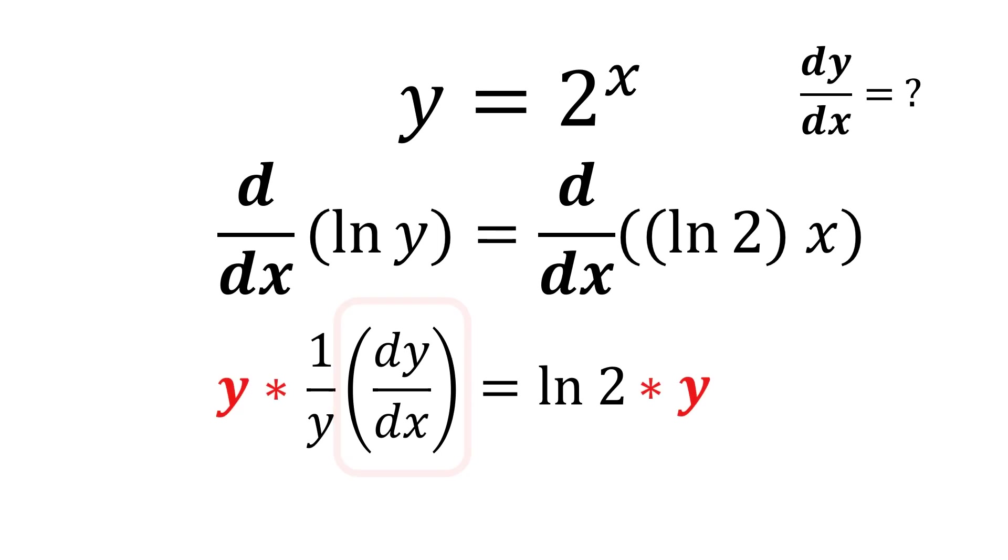All we have to do now is to solve for dy dx. Multiply both sides by y, so that we can cancel out y on the left-hand side. And we're only left with dy dx.